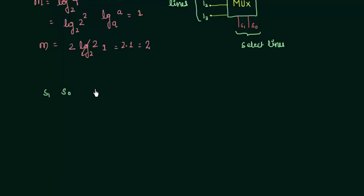We are having S0 and S1 as our select lines. So depending upon the values of S0 and S1 we are going to have our output Y. So as there are 2 variables we are having 4 possible combinations 0 0, 0 1, 1 0, 1 1.